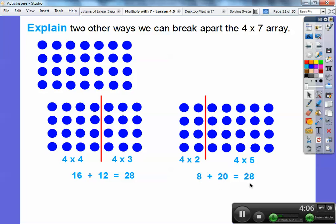If we did one and six, it would be four times one is four. Four times six is twenty-four. Four plus twenty-four is twenty-eight. There's all kinds of ways you can break that up.